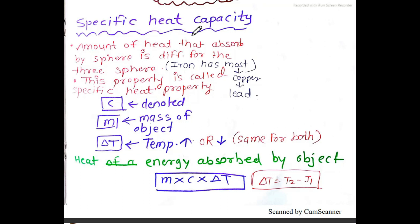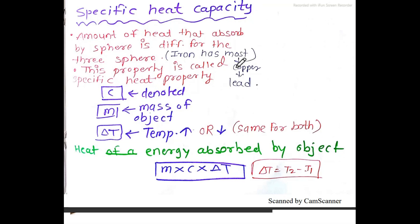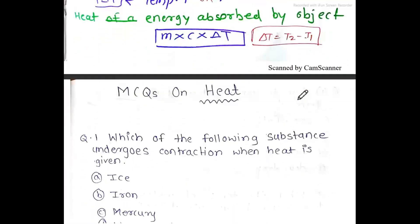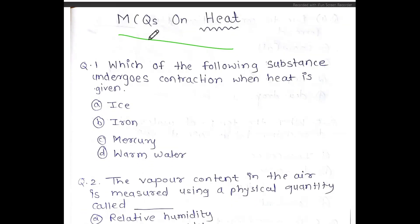What is specific heat? It is the amount of heat absorbed by a substance. Looking at a diagram comparing three spheres — copper, iron, and lead — iron has the highest specific heat, followed by copper and then lead. The main resource now is MCQs, so we need to solve them.